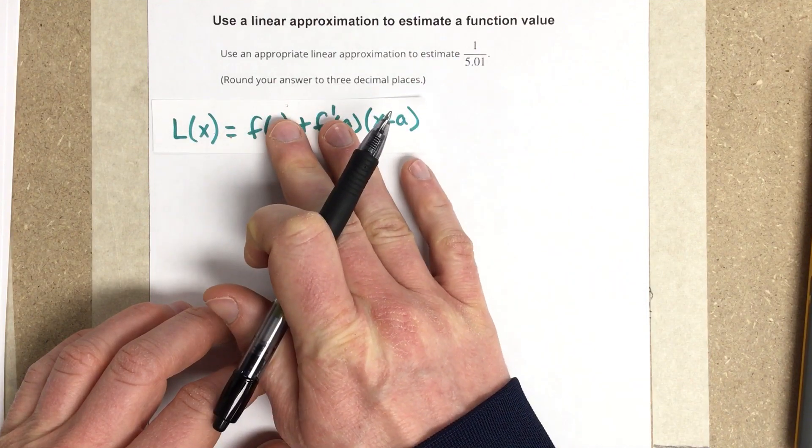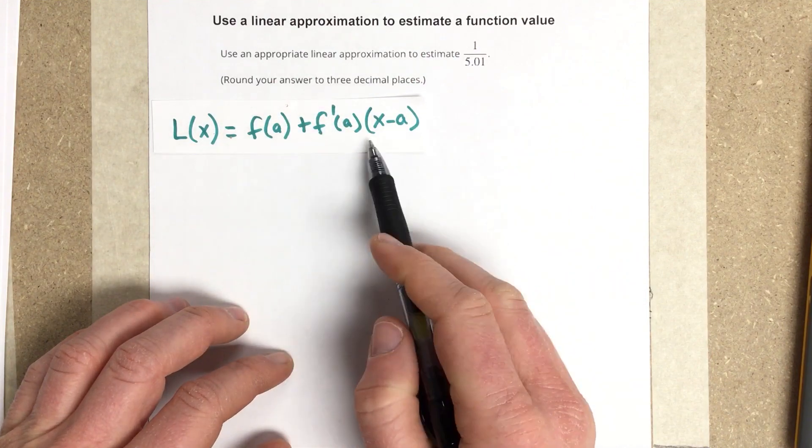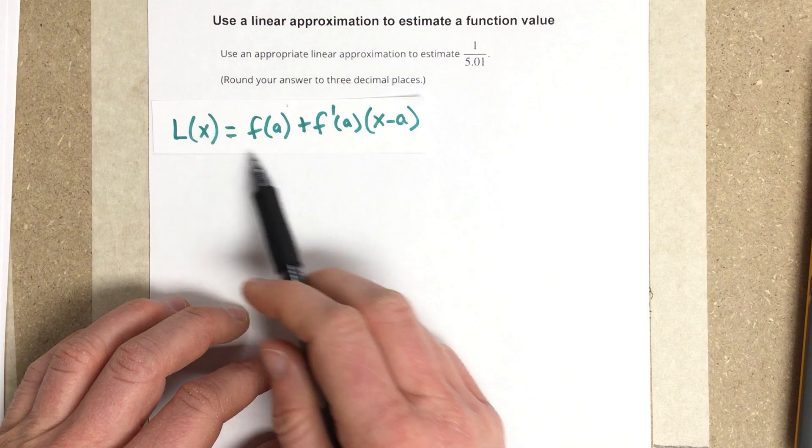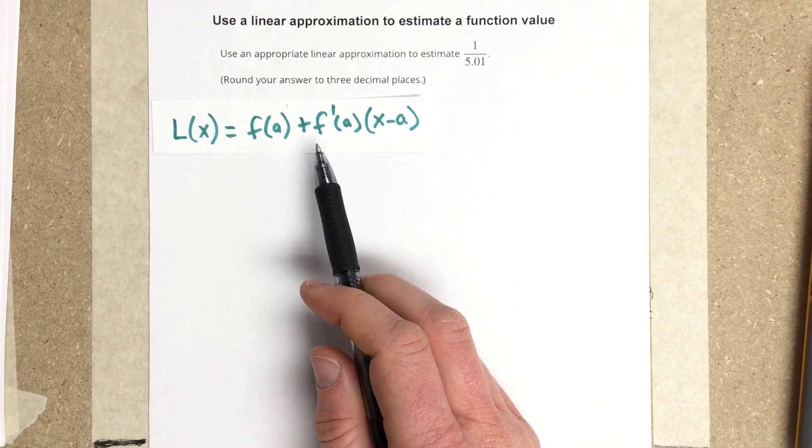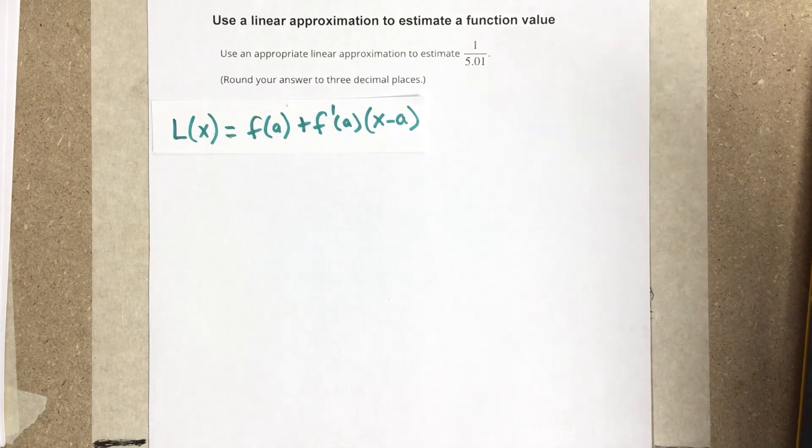Now, the linear approximation equation is written like this, and this is really just the tangent line equation. It's a general equation for the tangent line for any function.